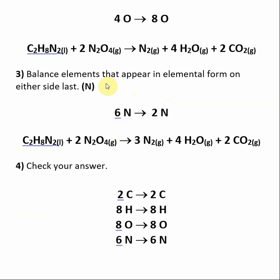In the last step, we look for elements that appear in elemental form — meaning an atom or molecule that contains only one element. The only molecule that fits this description is N2, which contains only nitrogen. We balance this last because changing the stoichiometric coefficient on nitrogen will not affect any of the other elements. We have two nitrogens from one compound and four nitrogens from N2O4, giving six nitrogens on the left. On the right, we have N2, so we put a stoichiometric 3 in front of N2, giving six nitrogens on both sides.